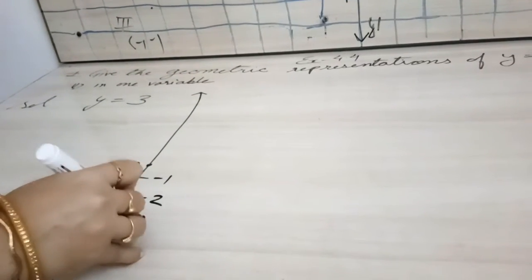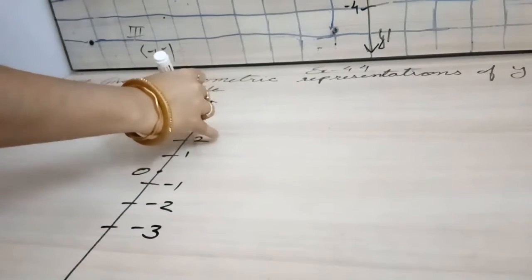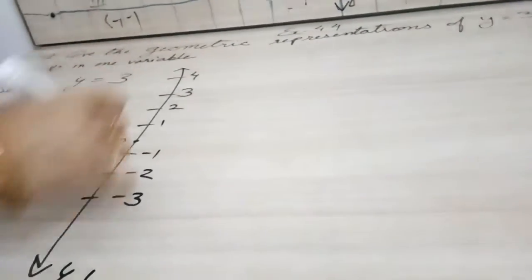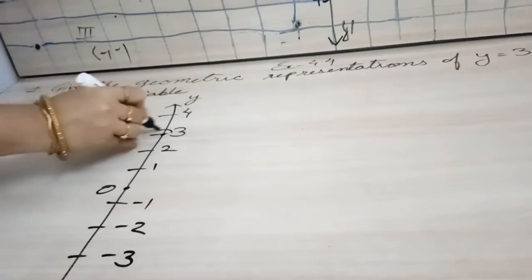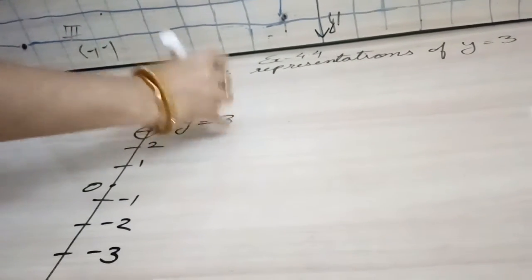Here it will be minus 1, minus 2, minus 3, and here it will be 1, 2, 3, 4. This is our y-axis, and here at 3 we will put a point and write y equals 3.